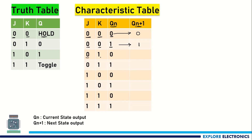When J is 0 and K is 1 and the current state of the output is 0, irrespective of the current state, it will generate the output as 0. Because when J=0, K=1 is the input, as we have seen in the truth table, the output will be 0.